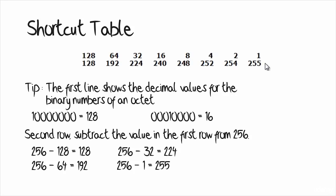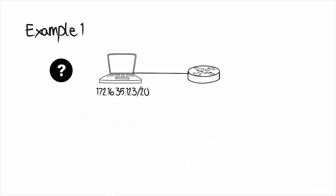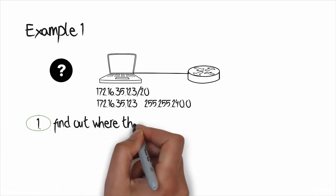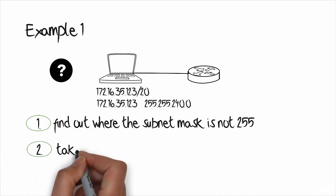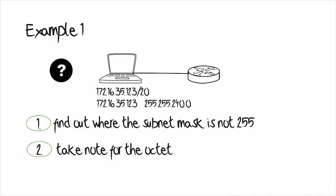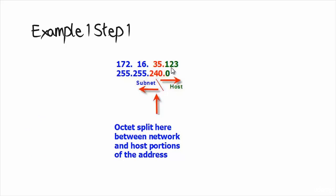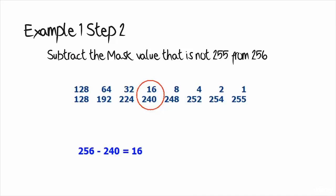Write this table out before attempting any subnetting question. If given a host address of 172.16.35.123/20, or decimal equivalent 255.255.240.0, the first thing to work out is where the subnet mask is not equal to 255, and note that octet — that's where the network and host portions both reside. In this example, the subnet mask in the third octet is 240, not 255, so there's a split between subnet and host in the third octet. The first two octets are network, the last octet is host, and the third octet contains the split.